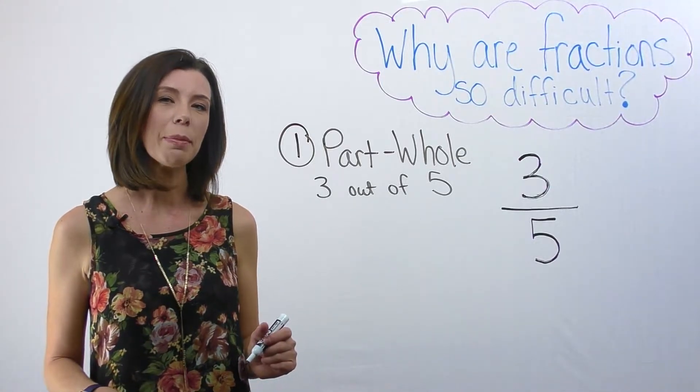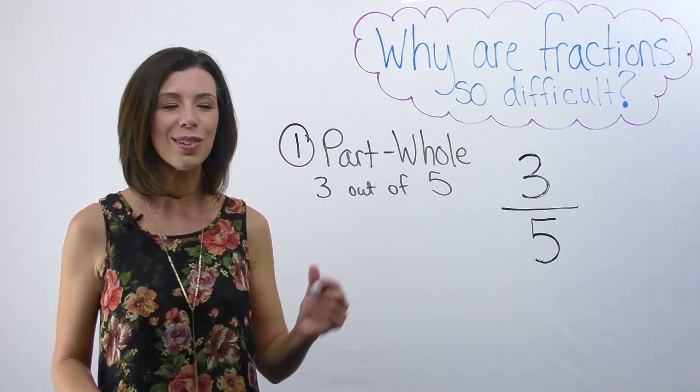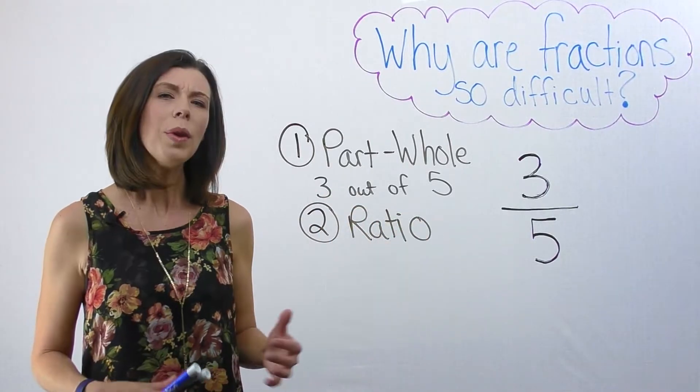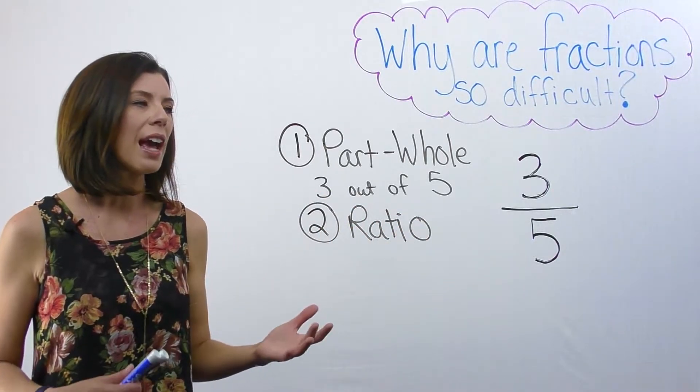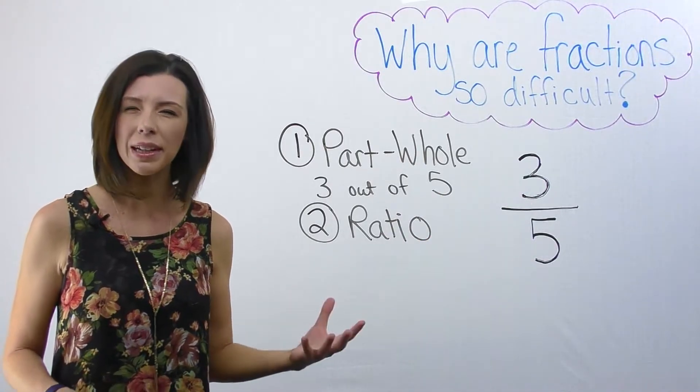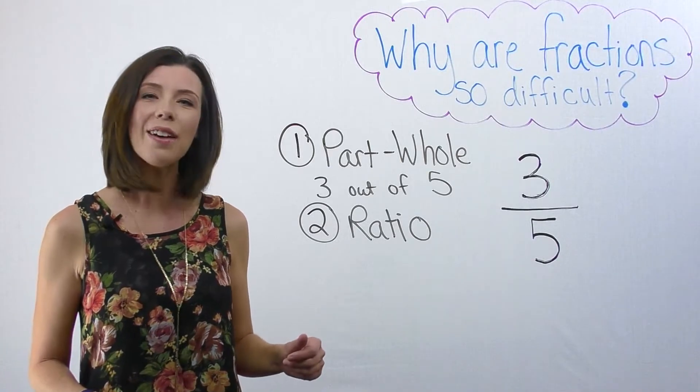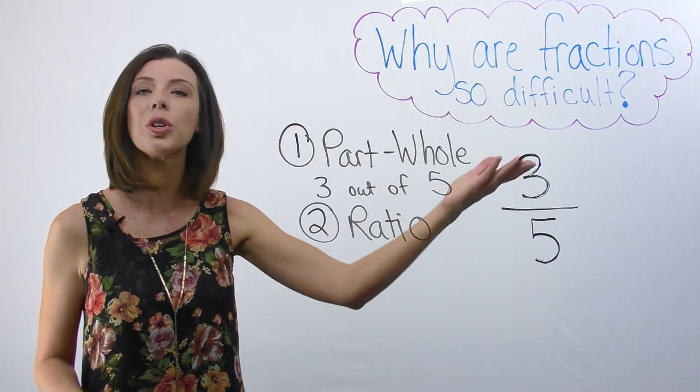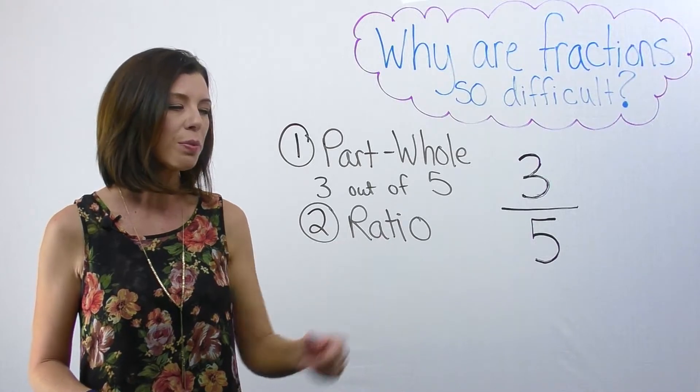The next way that I want you to think about fractions is as a ratio. We can interpret this same fraction as three boys for every five girls. This is almost a multiplicative relationship, right? We have almost twice as many girls as boys. So this ratio.